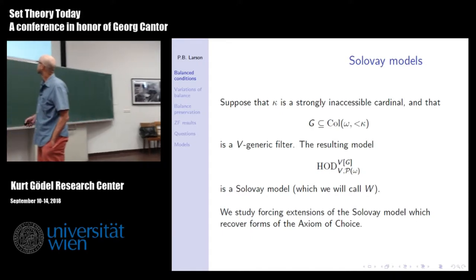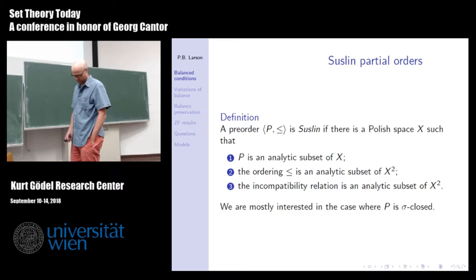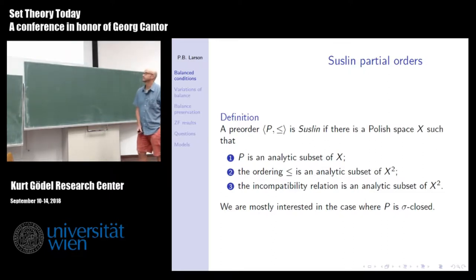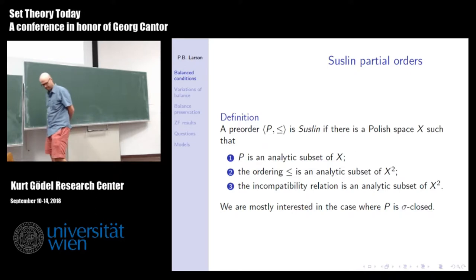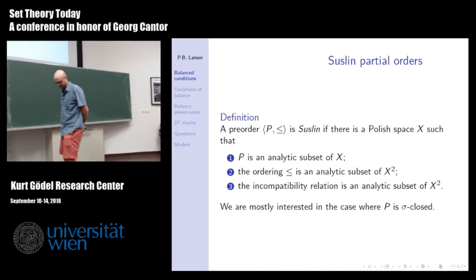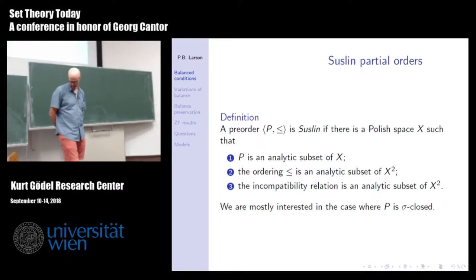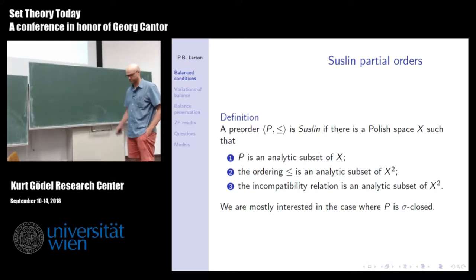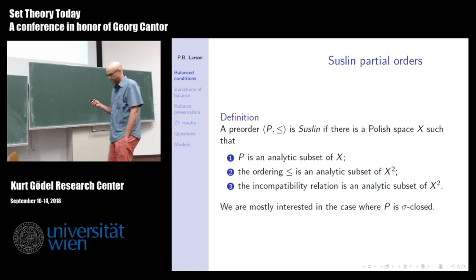So which forcing extensions? We're going to look at forcing extensions by partial orders that look like this — they're really pre-orders, orders that are reflexive and transitive and live on Polish spaces. The members of the Polish spaces are really codes for things, so different things can code the same thing. The order is an analytic subset of this Polish space, and the order and incompatibility relation are also analytic. In this talk all the orders we consider will be sigma-closed, but there are interesting examples where the order is not sigma-closed but still doesn't add reals.